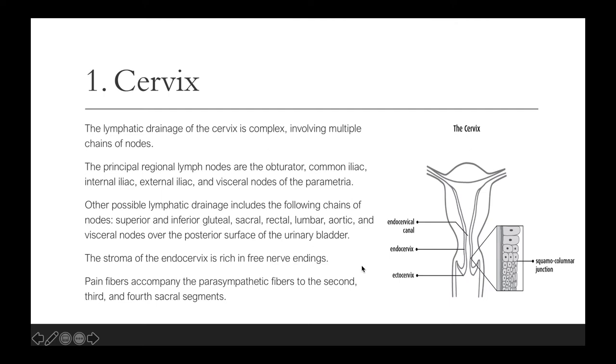The stroma of the endocervix is rich in free nerve endings, and pain fibers accompany the parasympathetic fibers to the second, third, and fourth sacral segments.